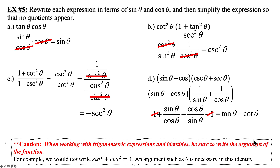You have to put an argument with sines, cosines, and tangents. You cannot leave the theta off — or capital A, B, or X, whatever we're using — you must write an argument. I notice some of you are still omitting it, and I'm going to keep dinging you points until you learn your lesson. It is important to include the argument value with every trig function.